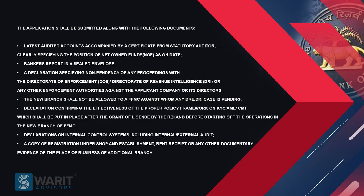Now let's discuss the documentation requirements for an additional FFMC license. The documents consist of latest audited accounts accompanied by a certificate from the statutory auditor clearly specifying the position of net owned funds as on date, a banker's report in a sealed envelope, a declaration specifying non-pendency of any proceedings with the Director of Enforcement. The new branch shall not be allowed to FFMCs against whom any DRE or DRI case is pending. Declarations confirming the effectiveness of the proper policy framework on KYC, AML, CMT, etc.